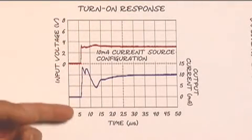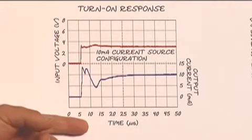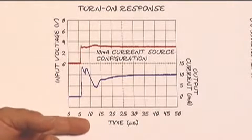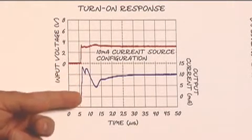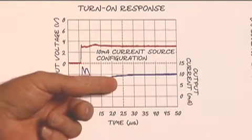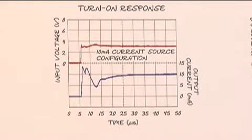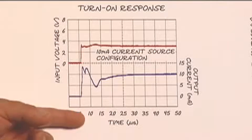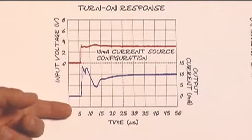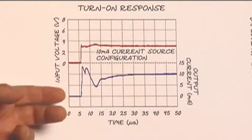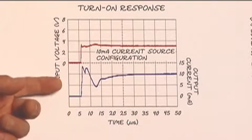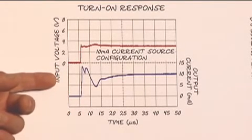Here we look at the transient response, the turn-on response. We step the input up and we look at what the current does on the output, and we see it's got some overshoot, but by the time we're out at 20 microseconds, the current has settled down and it's fully started. So its turn-on response is actually excellent for a complicated integrated circuit.